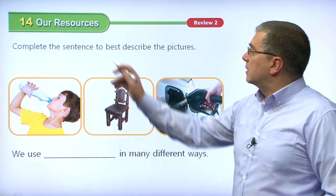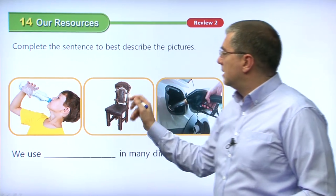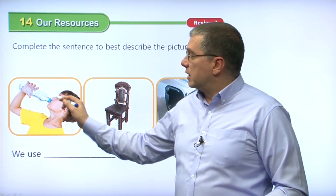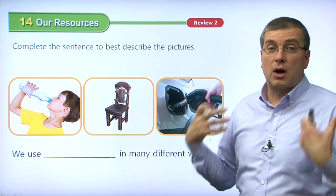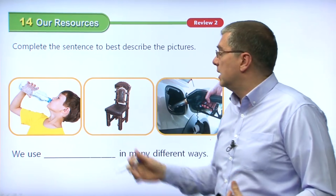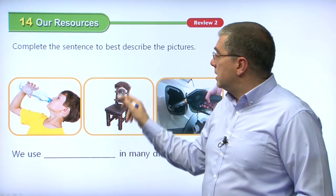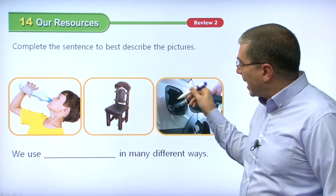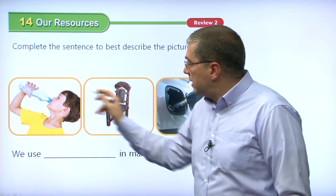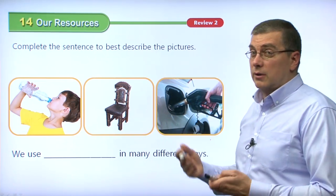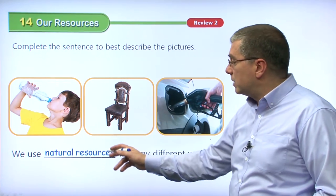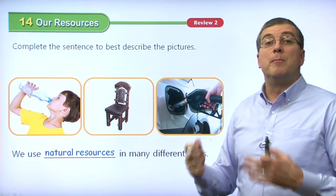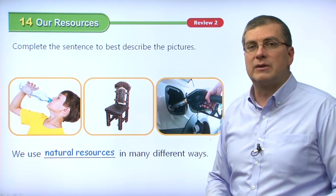Let's complete the sentence to best describe the pictures. We use blank in many different ways. We're using water here — our bodies need water to function and survive. We use wood as furniture — to make furniture and many things from wood. And we use oil to make gasoline; we put gasoline into our car and it makes our car go. All of these things are found in nature; we use them. So we use natural resources in many different ways — just three examples of the many, many ways that we use natural resources in our lives.